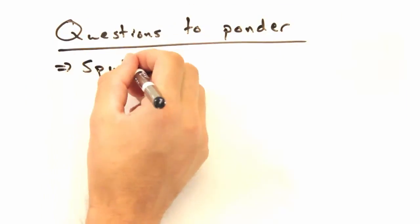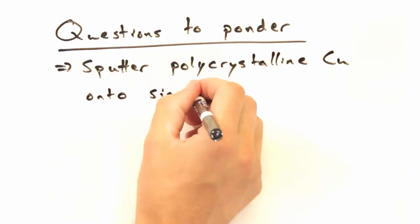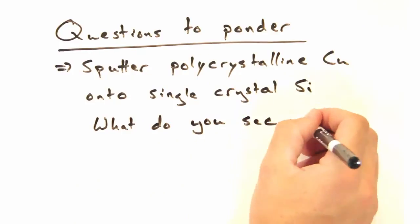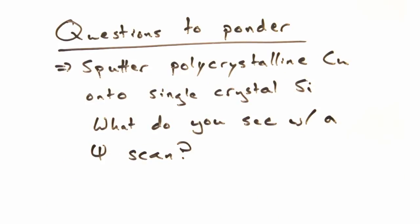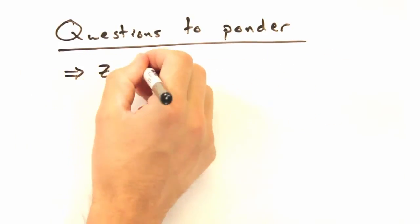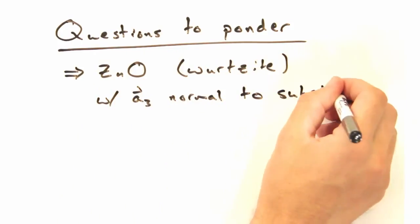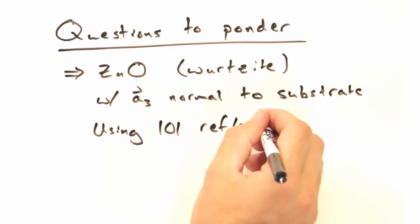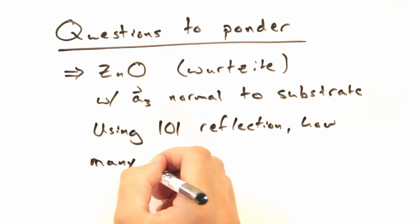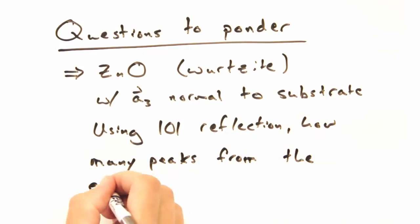Here's one to ponder on your own. If you sputtered polycrystalline copper down on the silicon, what would you see with a phi scan? And here's another. You've grown the zinc oxide wurtzite film with the A3 axis normal to the substrate. If you use the 101 reflection, how many peaks will you pick up?